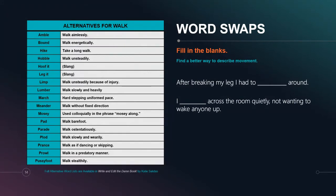Now let's swap out the word 'walk,' which is another lazy modifier we tend to use everywhere when talking about movement. We can describe how somebody is moving instead of just saying they walked across the room. 'After breaking my leg, I had to [blank] around.' Are you hobbling? Lumbering? Limping? 'I [blank] across the room quietly, not wanting to wake anyone up.' Would you tiptoe? Skulk? Pussyfoot across the room? Depending on how you want to convey that movement, you can change the word in multiple ways and create an impactful sentence that helps readers experience what's happening with your character.